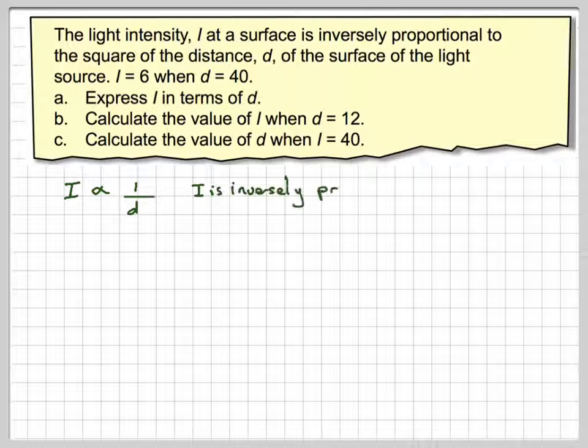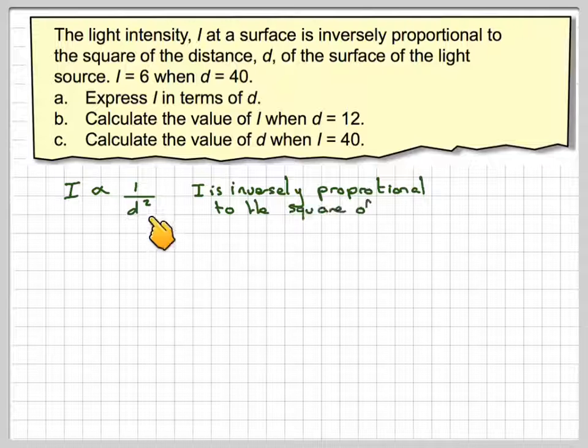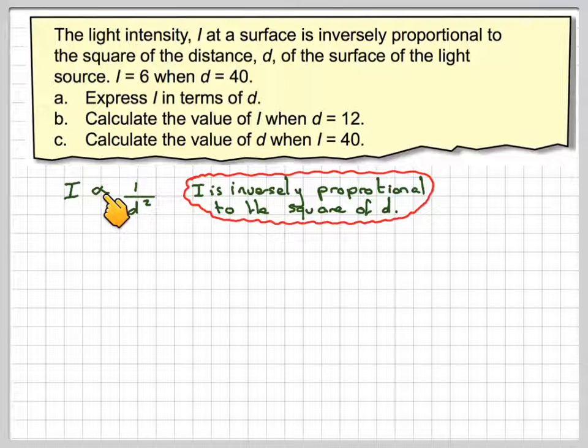So what we've got is I is inversely proportional. That means write it as 1 over D. I is inversely proportional, but it's to the square of D. So we have to write that I is proportional to 1 over D squared. Inversely means we have to write it as 1 over.